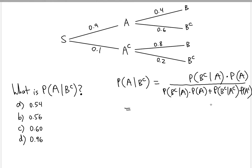Once you feel comfortable including everything correctly and not misplacing A complements and B complements, you switch the two around in the numerator in the first expression of the product, and make sure the product also includes the probability of the conditional. The same structure applies in the denominator. Once you do this correctly, just substitute in the numbers and you'll be fine.